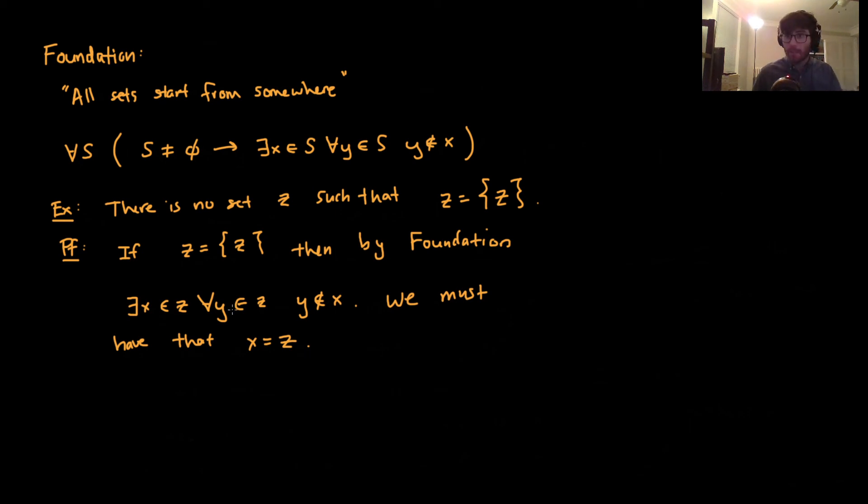Well, we can pick any Y for which this kind of final statement has to be true. If Y is equal to Z, then what must happen is it must follow that Z is not an element of itself. But that's a contradiction. That's a contradiction because Z, by assumption, is an element of itself. So by definition, Z is an element of itself.